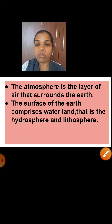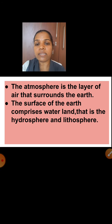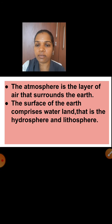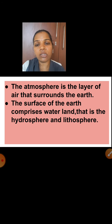The atmosphere is the layer of air that surrounds the earth. The surface of the earth comprises water and land — water is called the hydrosphere and land is called the lithosphere.